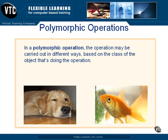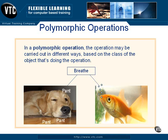So for our example here, we have two types of the animal class: a dog and a fish. If we're talking about the polymorphic operation breathe, at runtime the breathe operation will be performed differently by the fish, breathing water through its gills and producing bubbles, than it will by the dog that will breathe air and pant.